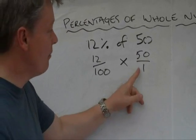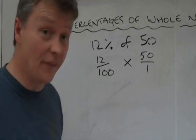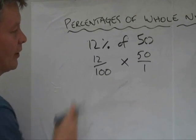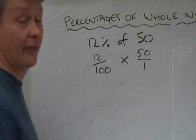Which is exactly the same, because the amount of times 1 will go to 50 is 50 times. Okay, so the question now is 12 over 100 multiplied by 50 over 1.